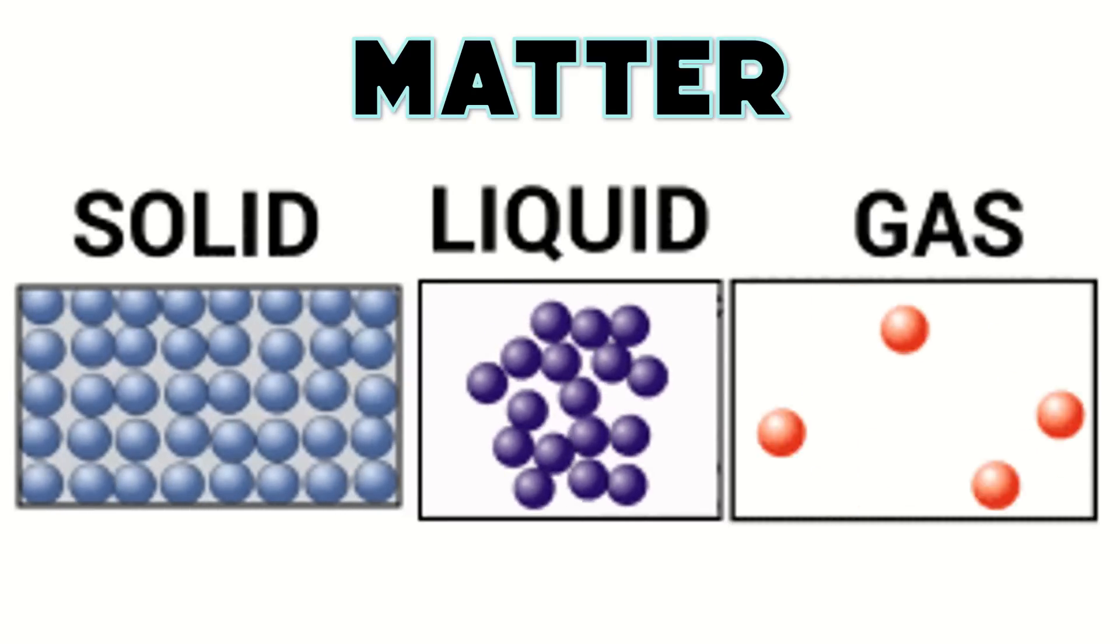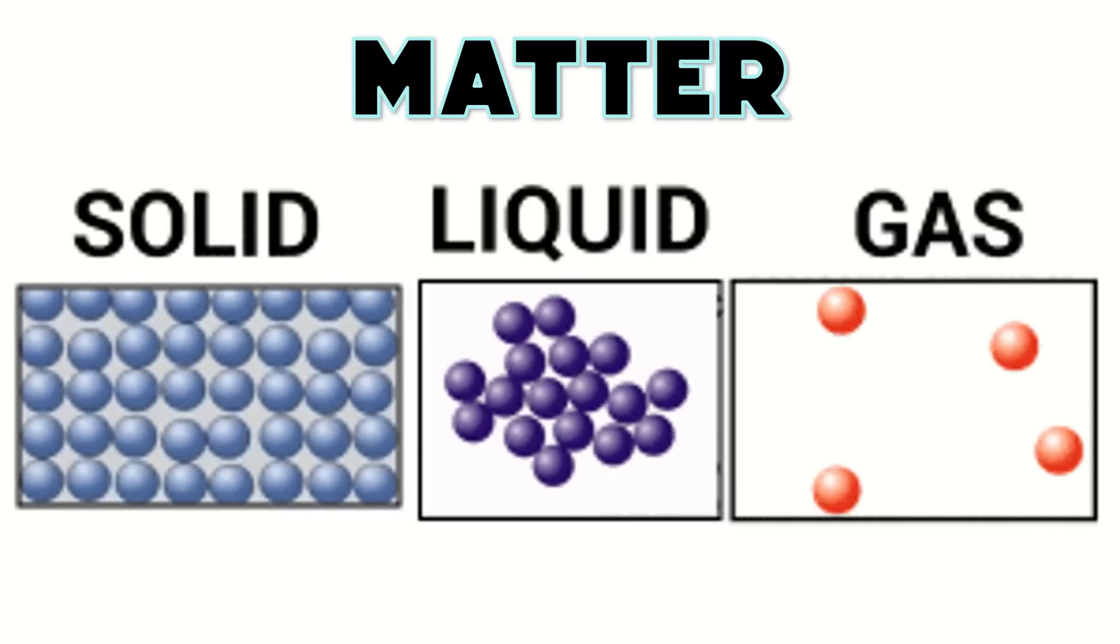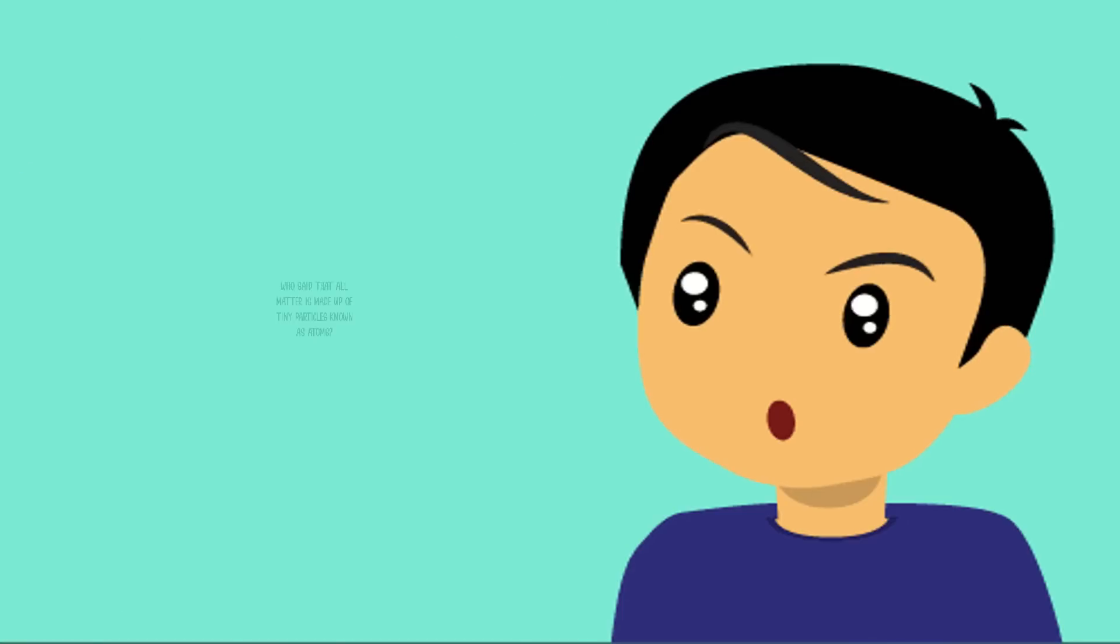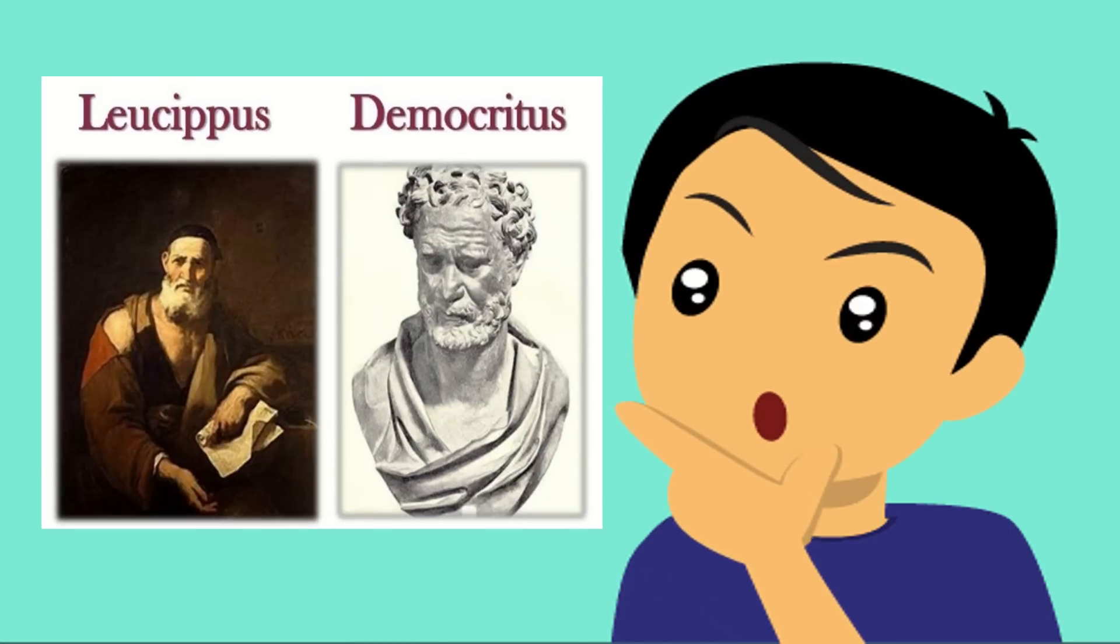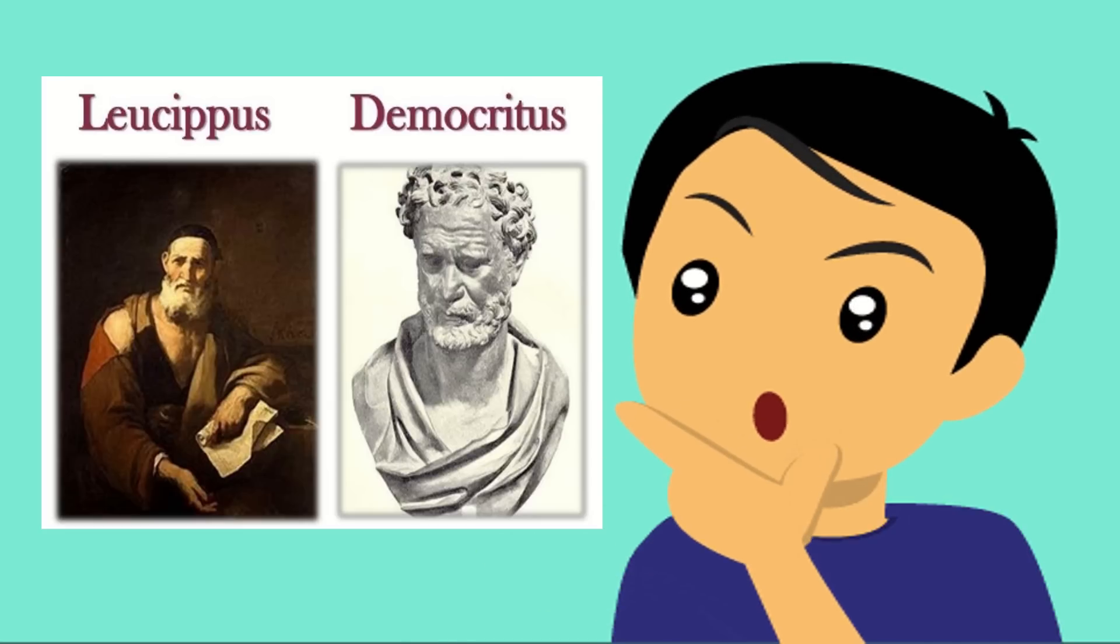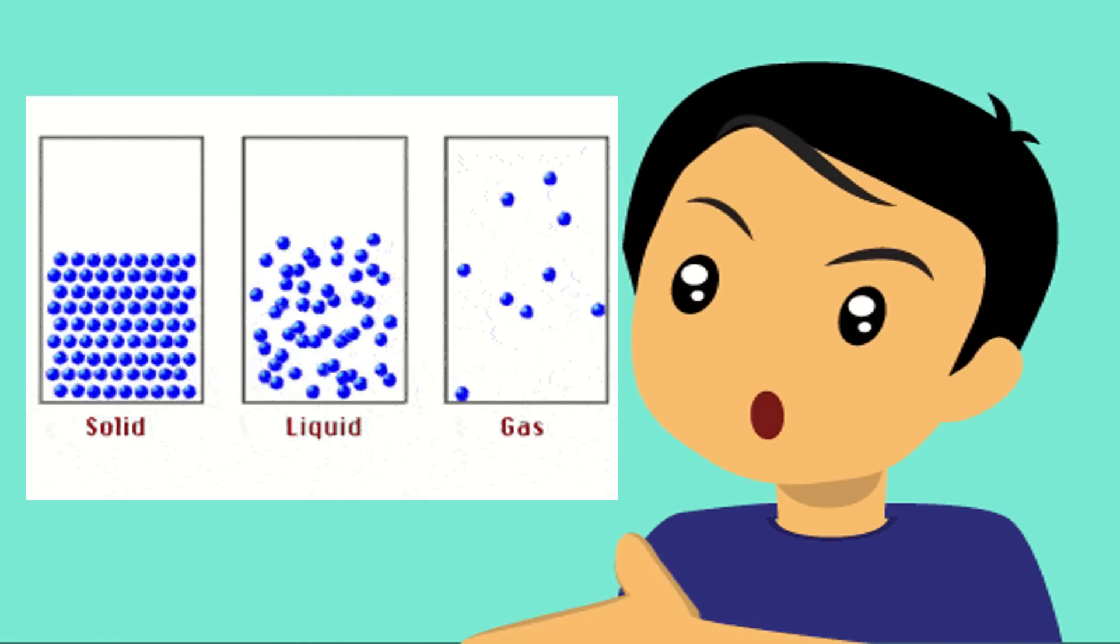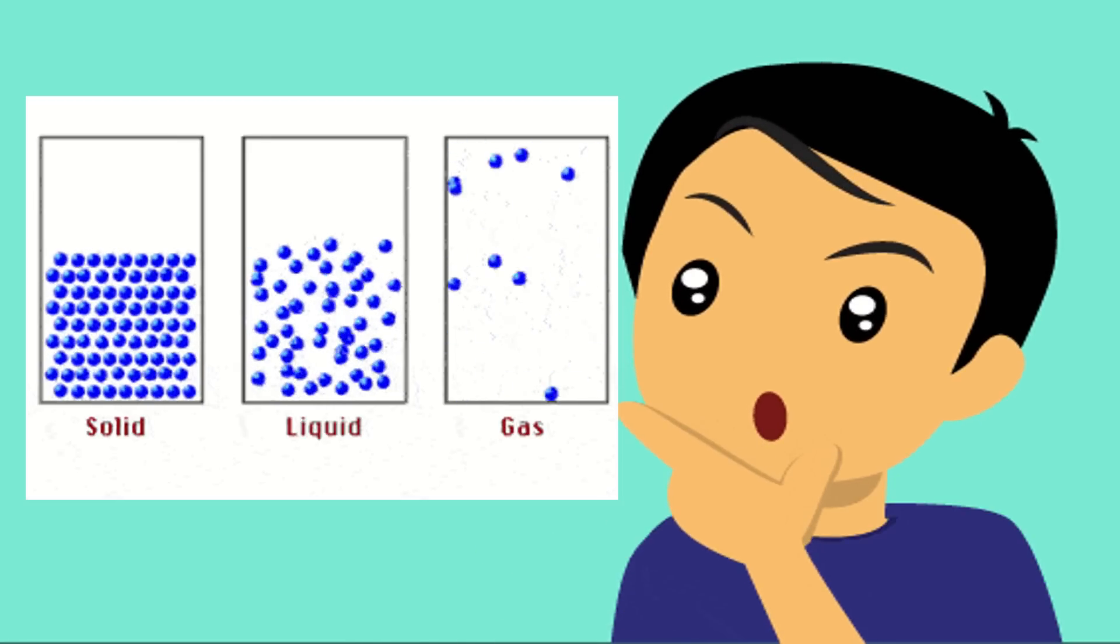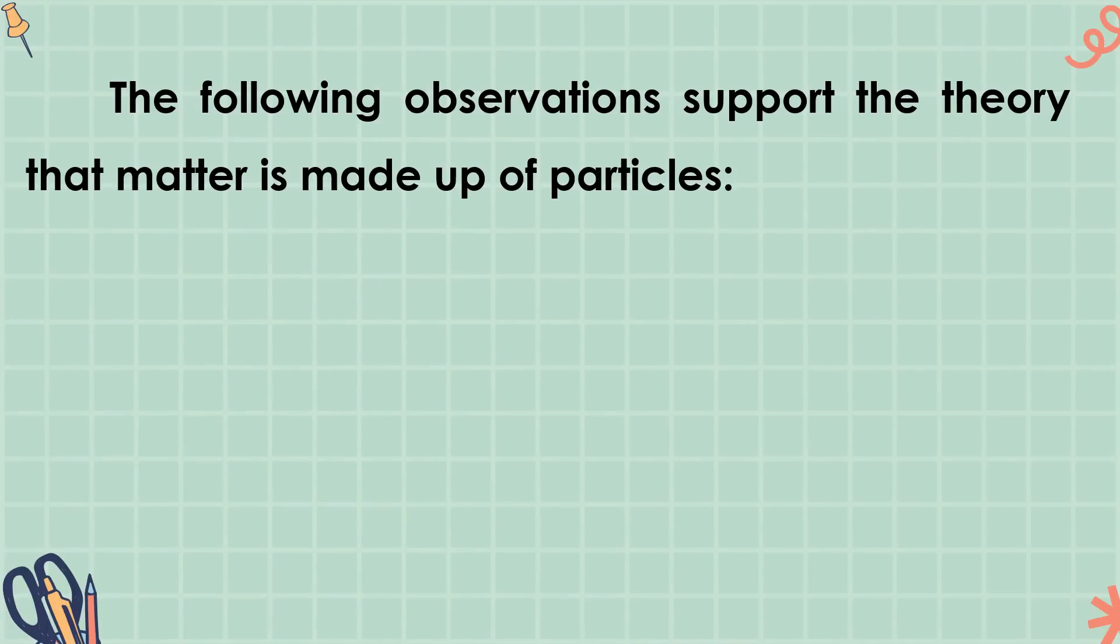Matter is made up of particles that are in constant random motion and are held together by attractive forces. At ang tawag sa mga tiny particles na ito ay atoms. Pero, sino nga ba ang nagsabi na ang matter is made up of tiny particles known as atoms? Sila ay si Leucippus at ang kanyang estudyante na si Democritus. Sila ang nag-propose at nagsabi na lahat ng matter ay mula sa small, indivisible particle at tinawag nila itong atoms. Particles of matter keeps on moving all the time. Pero magkakaiba ang paggalaw ng solid, liquid, and gas. Ang kanilang mga particles ay may mga spaces sa pagitan at may kakayahan sila na mag-attract ng bawat isa. Again class, narito ang ilan sa mga observations na sumusuporta sa theory na ang matter ay gawa sa particles.